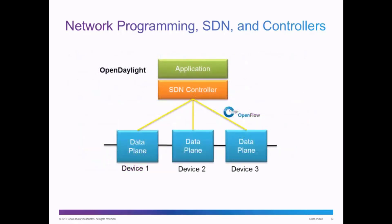An example of a network controller used in SDN, or Software-Defined Networking, might be the OpenDaylight platform. The OpenDaylight platform is an open source SDN controller platform. You can see in this example where the SDN controller works with an application to then control the network devices — Device 1, 2, and 3 — at the data plane.